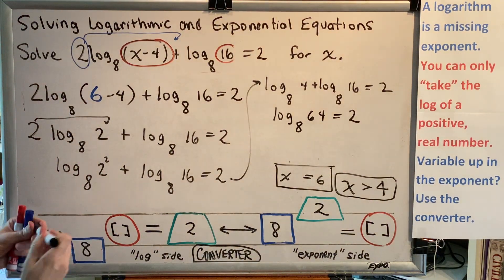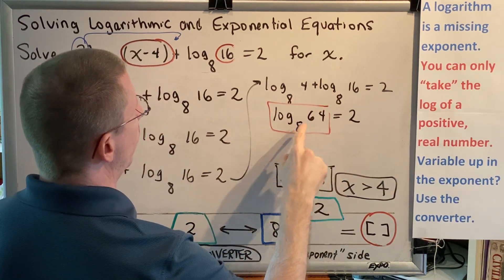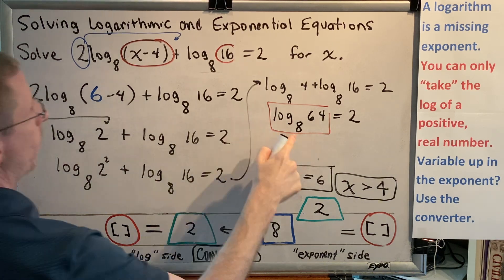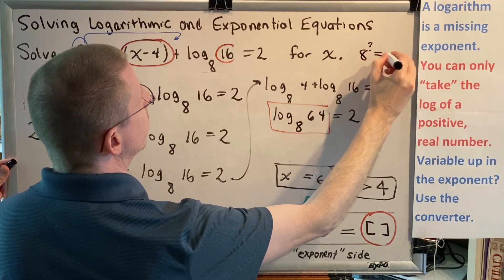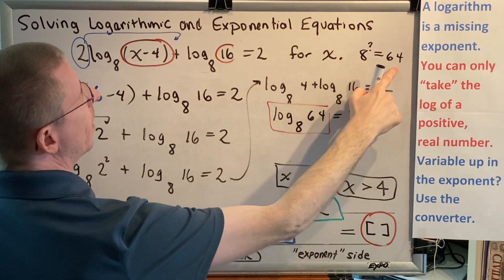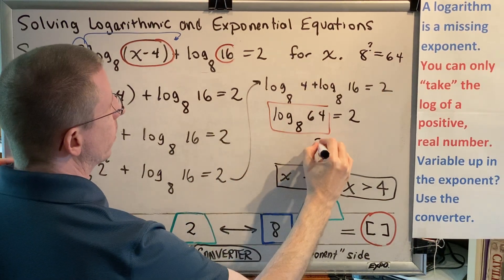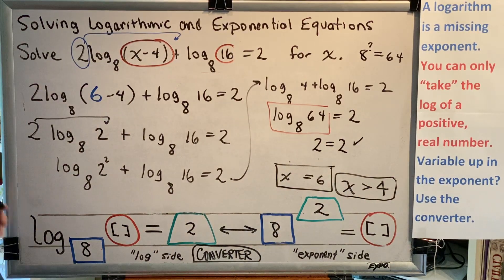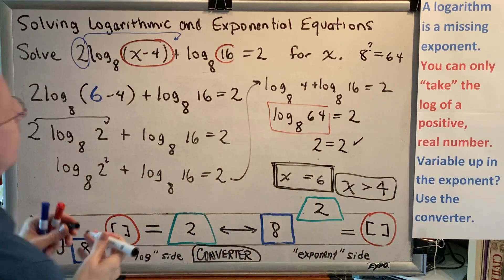And now I take a moment and I think. I have a log where I have a number for the base and a number for the argument. So what is the exponent that goes on base 8 to make 64? How many times do you have to multiply 8 by itself to make 64? The answer is 2. And if 2 is the missing exponent, then 2 is the value of this log. And therefore, we get 2 equals 2 and it checks. Therefore, our answer x equals 6 is validated as being correct.